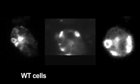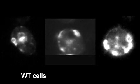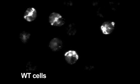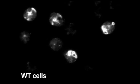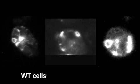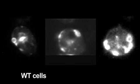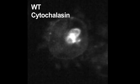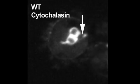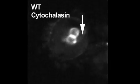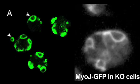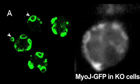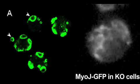Previous studies on contractile vacuole dynamics had focused on the dramatic action at the cell cortex. But when Hammer and his colleagues looked deeper into wild-type cells, they saw membranes moving from the centrosome to the cell cortex and vice versa. In knockout cells, however, contractile vacuoles travelled out to the cell cortex along microtubules but couldn't stay there in the absence of myo-J. A similar effect was seen when wild-type cells were treated with cytochalasin to depolymerise the actin-rich cortex.